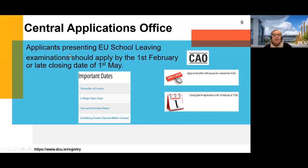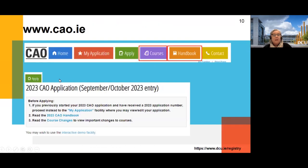The important dates on the CAO web page include a timetable, open days, and dates for tests and interviews — it's a very informative page. To start your application, hit 'apply'. Applications open every year from November.